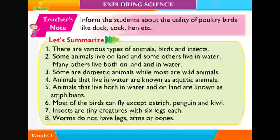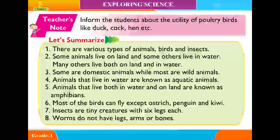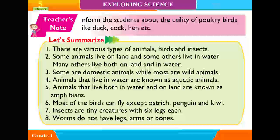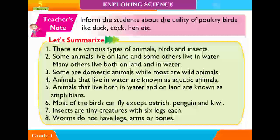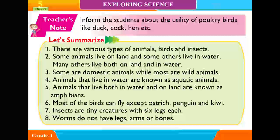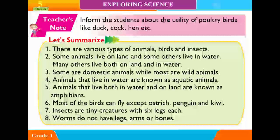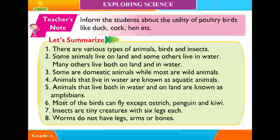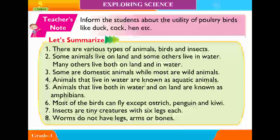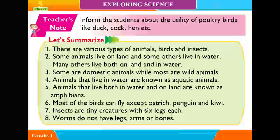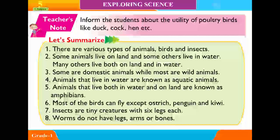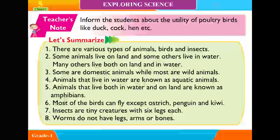6. Most of the birds can fly except ostrich, penguin and kiwi. 7. Insects are tiny creatures with six legs each. 8. Worms do not have necks, arms or bones.